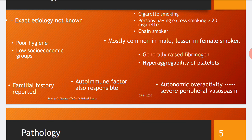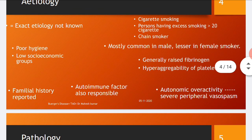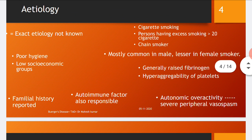As already noted, Buerger's disease is most common in male smokers and less common in female smokers. Generally, raised fibrinogen and hypercoagulability of platelets are seen, and autonomic overactivity with severe peripheral vasospasm is also observed in Buerger's disease.